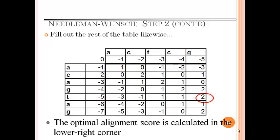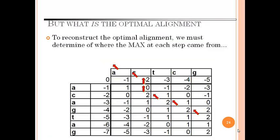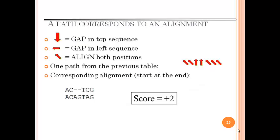The optimal alignment score is calculated in the lower right corner. To reconstruct the optimal alignment we must determine where the maximum at each step came from. A downward arrow is a gap in top sequence, a forward arrow is a gap in left sequence, and a diagonal arrow is the alignment of both positions.